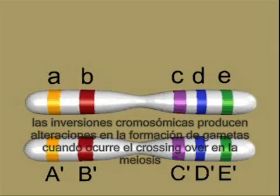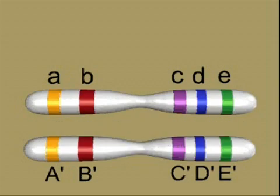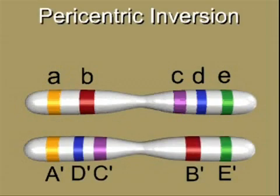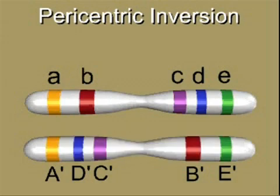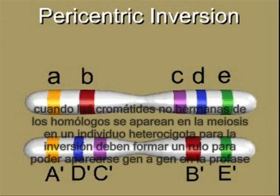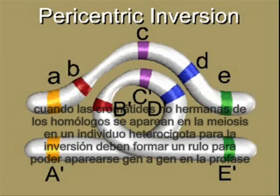Inversions of DNA within chromosomes lead to unusual meiotic products when crossing over occurs. A pericentric inversion spanning the centromere reverses the order of genes B through D. When non-sister chromatids pair at the beginning of meiosis in a cell heterozygous for the inversion, one of the chromosomes must form a loop to align properly.